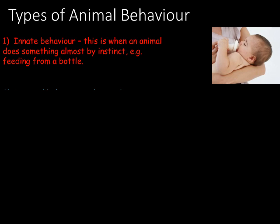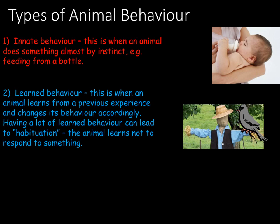Learned behaviour is where an animal learns from a previous experience and changes its behaviour accordingly. Having a lot of learned behaviour can lead to habituation, where the animal learns not to respond to something. For example, why we might see crows sitting on a scarecrow — initially the crow will be scared of the scarecrow as it associates it with danger, but over time the crow gets used to the stimulus and learns that the scarecrow is not harmful.